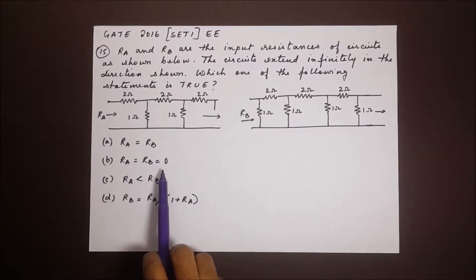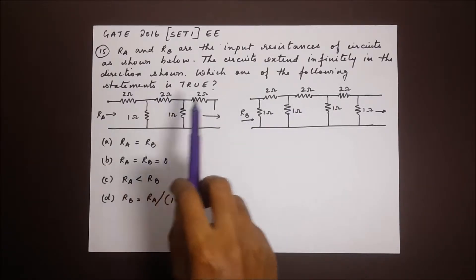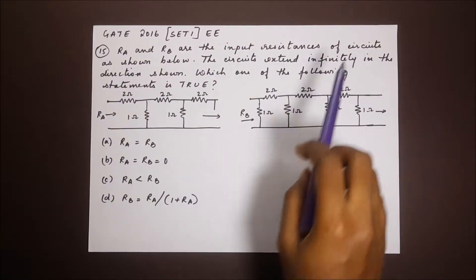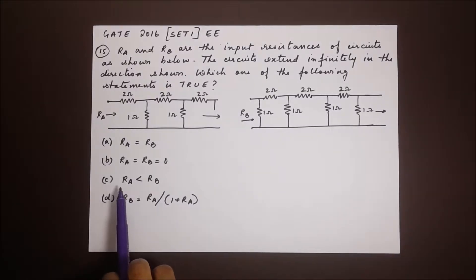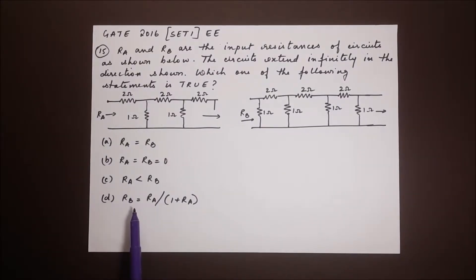Now they definitely cannot be equal to zero because they do have values because they extend on to infinity. So which leaves us with option C and option D. So it is one of these two.